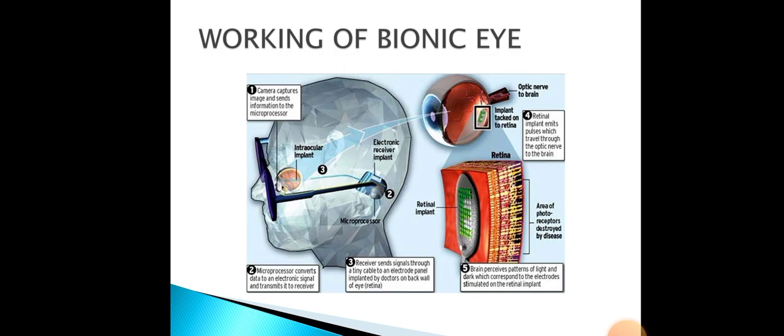The optic nerve of a blind person is sometimes damaged, so devices capable of bypassing the signals through alternative pathways are used, allowing the signal to reach the brain. As the signal reaches the brain, the brain starts decoding the signals and we are able to identify what the subject is. This process is very fast, which is why we are able to see similarly to the human eye. This is the working of the Bionic Eye.